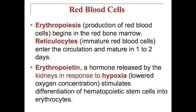Erythropoietin is a hormone released by the kidneys in response to hypoxia — a lowered oxygen condition — and it stimulates the differentiation of hematopoietic stem cells into erythrocytes.